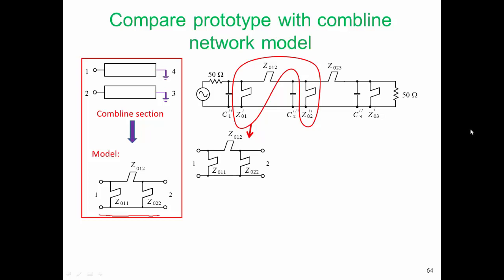We can see that we can realize that pi arrangement of shorted stubs by a combline section. And if we pull out the second pi arrangement, we see another pi arrangement of shorted stubs that can be realized by a combline section.